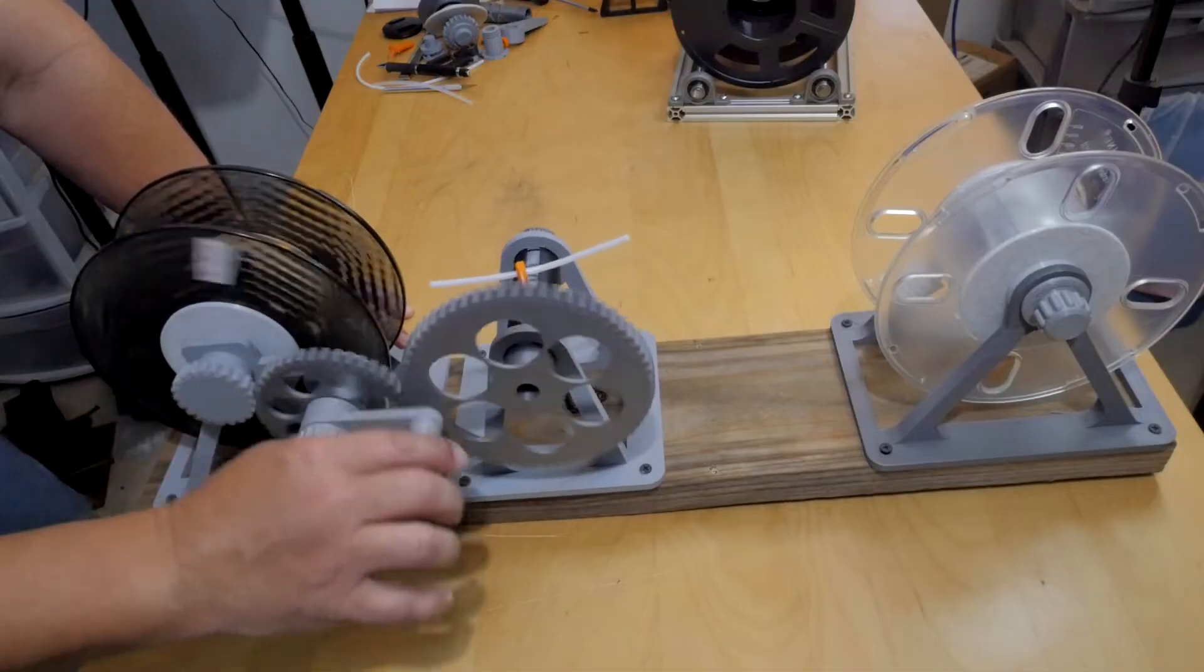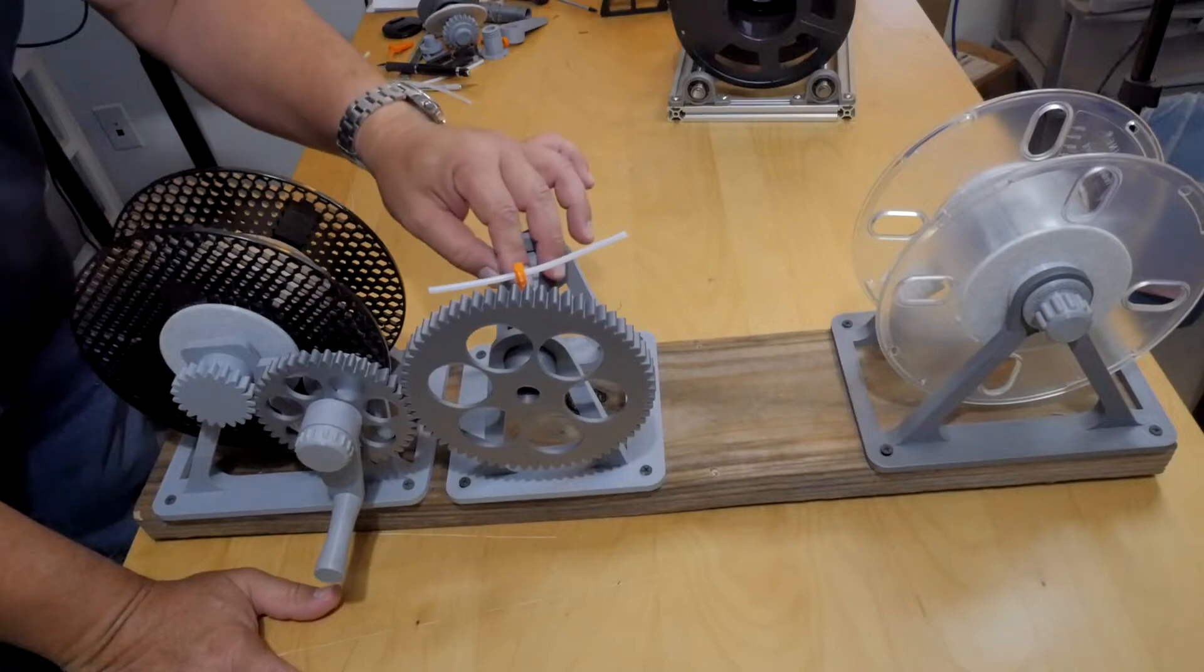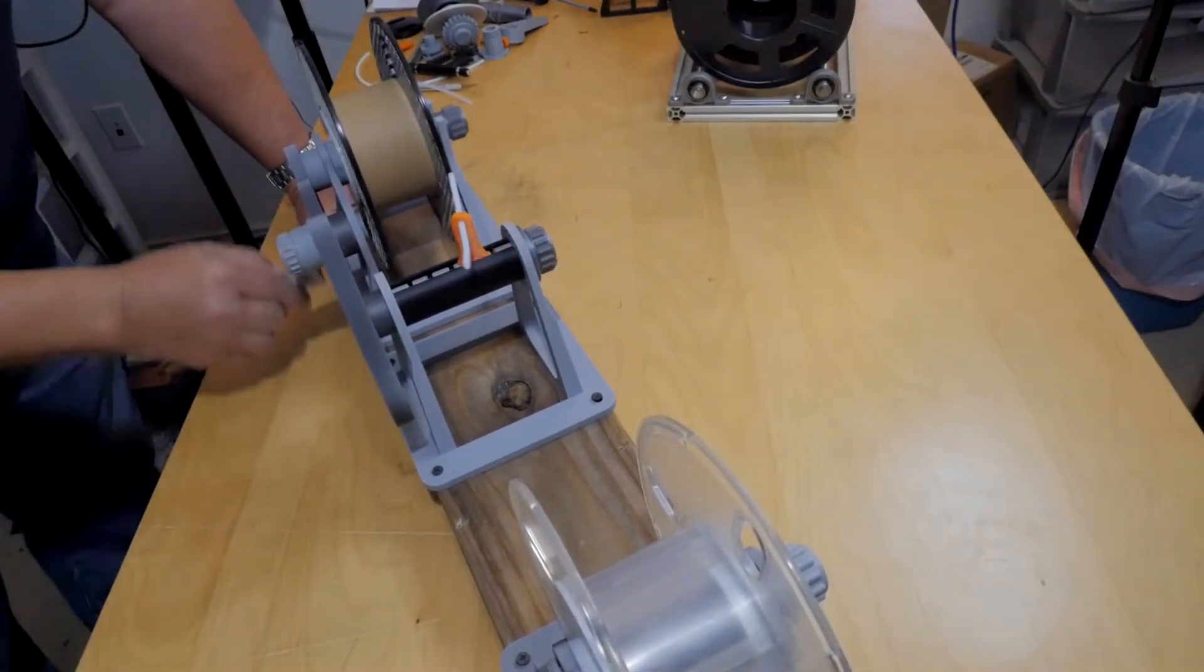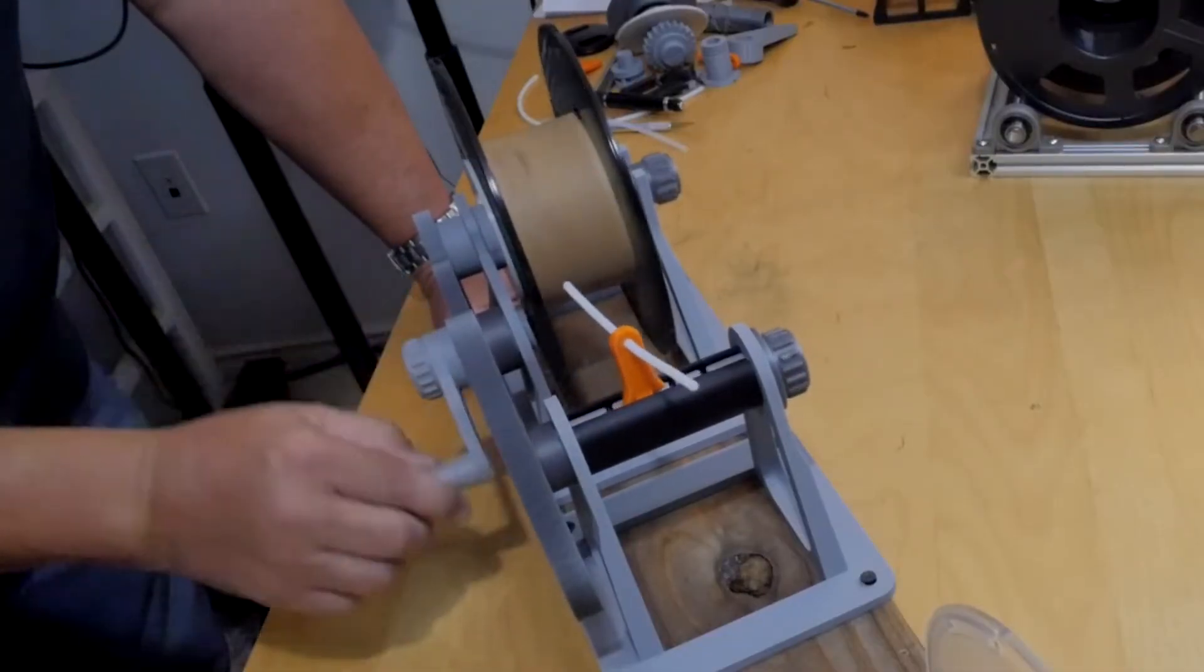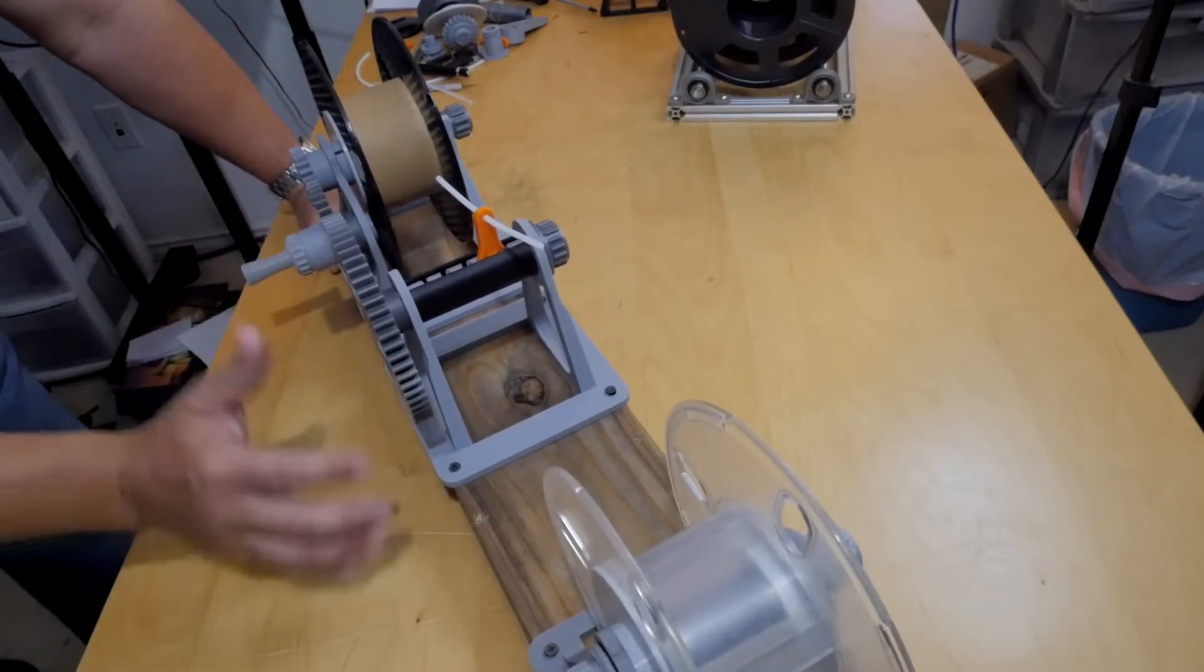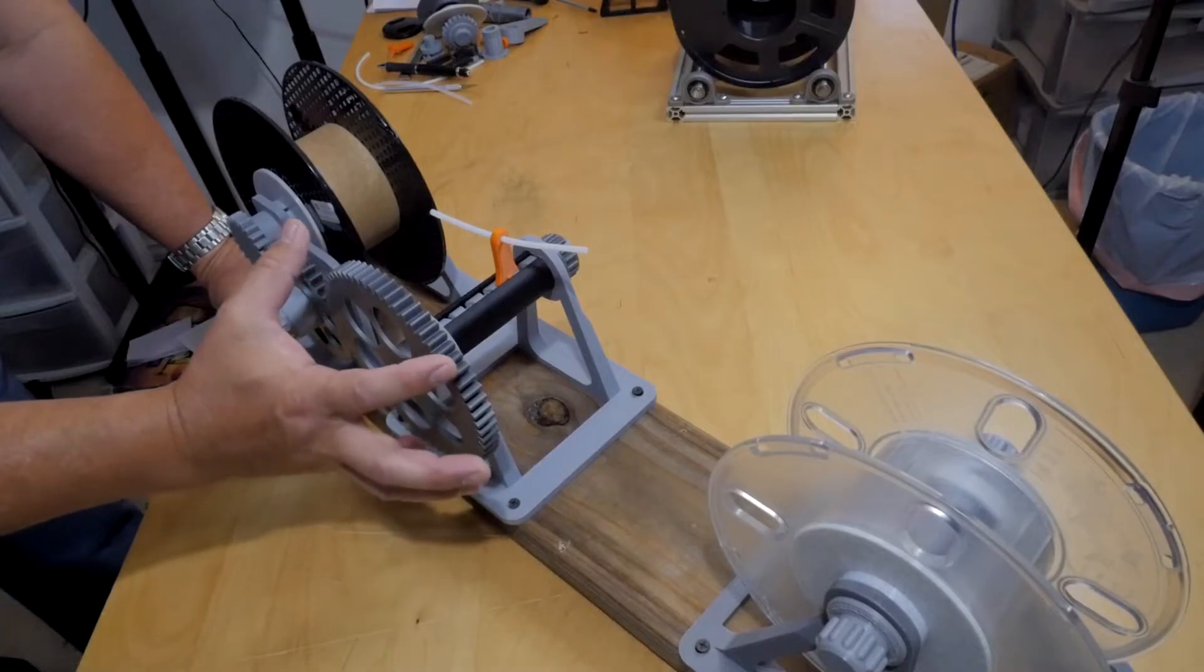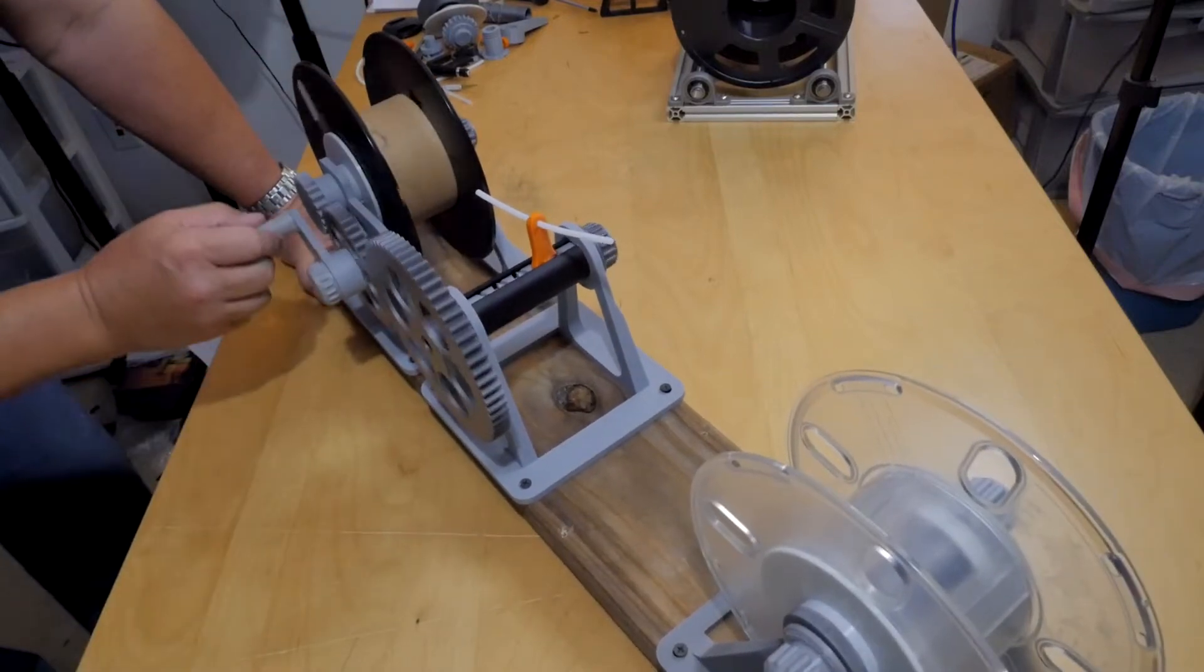From here we're going over to the midsection, this is the filament guide. As I turn it, the guide is moving back and forth. I left the gear this size but I could slow it down by making the gear larger. I'm calling it a worm gear.